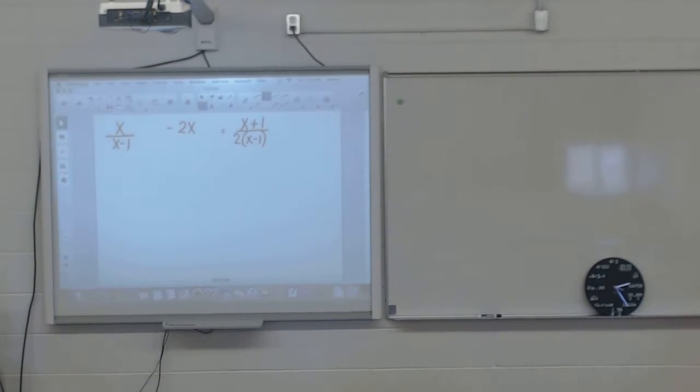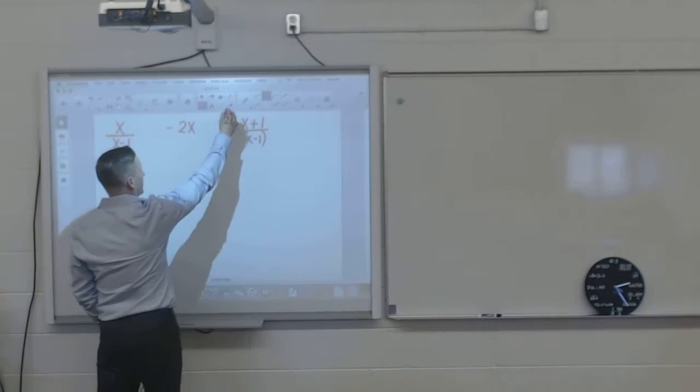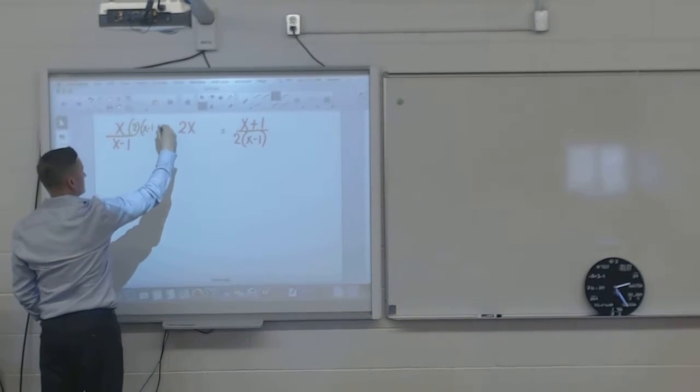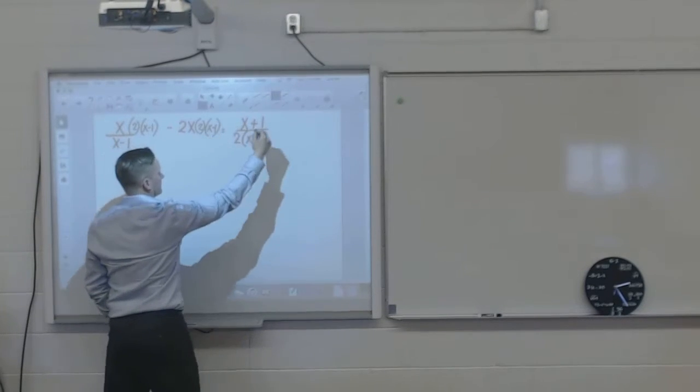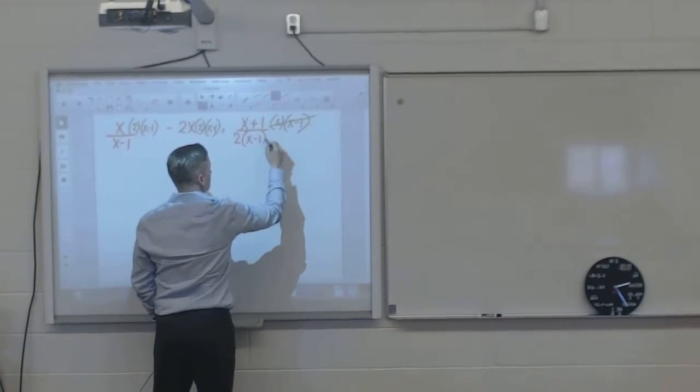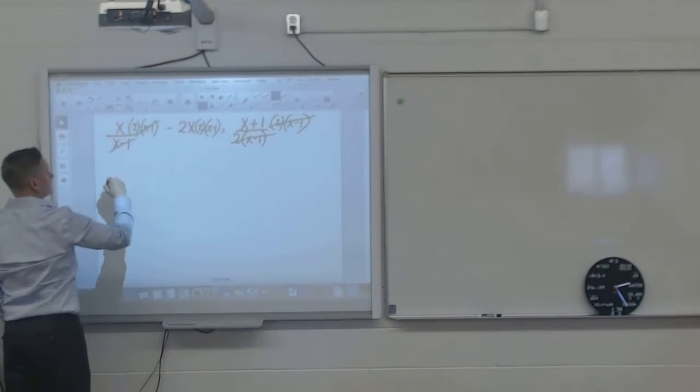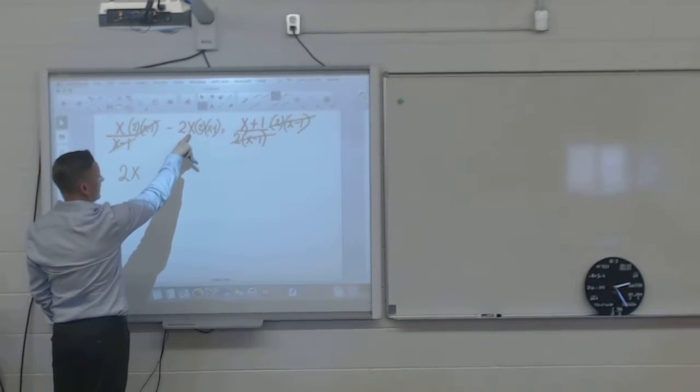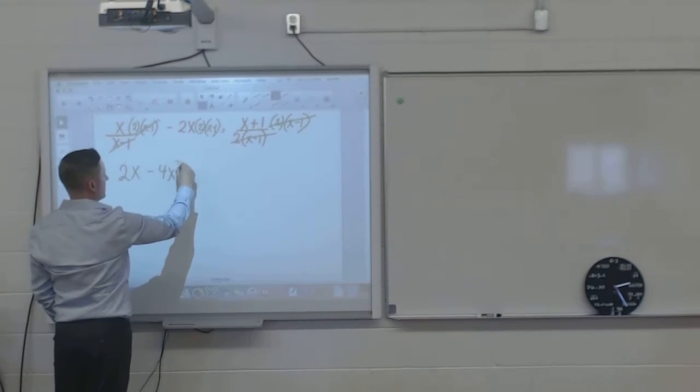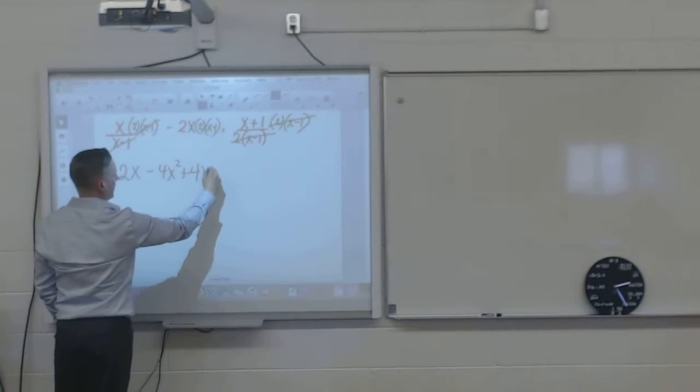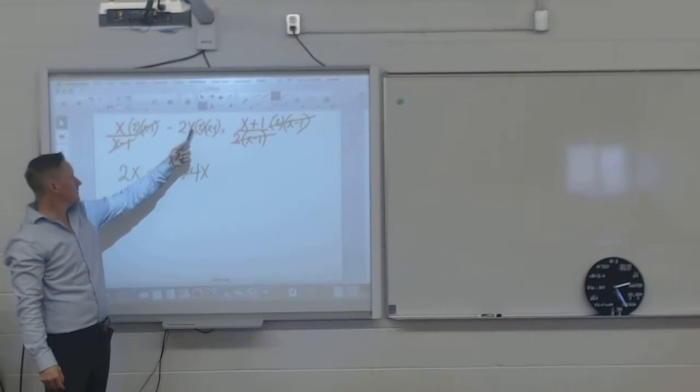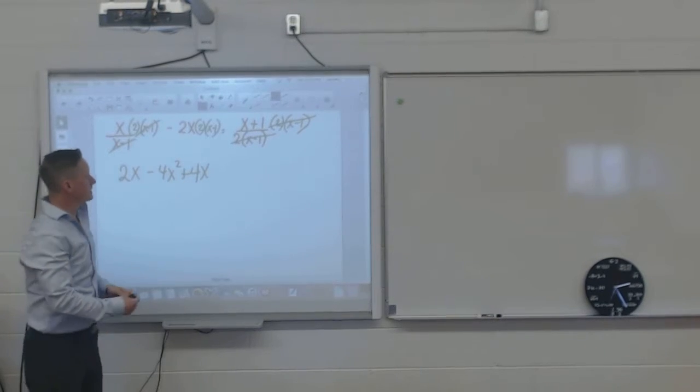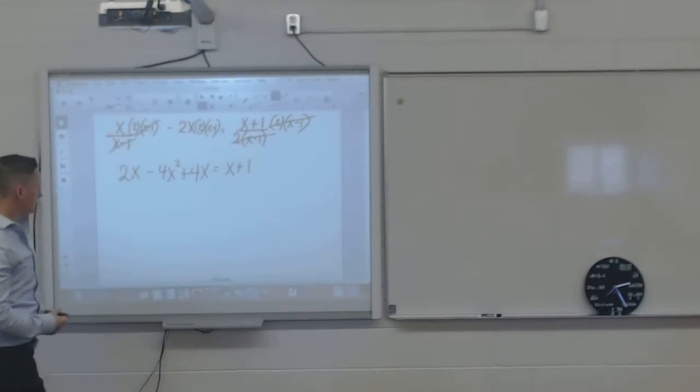So what's my common denominator here? 2 times x minus 1, correct? So 2x, this guy is going to be minus 4x, right? Multiply it through, so it's minus 4x squared plus 4x. Does that look right to you? 2x times 2 is 4x. 4x times x is negative 4x squared, because it's the negative. Negative times i. Give me a 4x. Equals x plus 1.